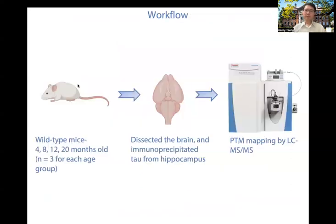In the first experiment of my REC project, I used wild-type mice with four different ages — 4, 8, 12, and 20 months old — with n=3 for each age group. I dissected the brains from these mice and isolated Tau from the hippocampus, since that's where H-Tau is located. I then sent this isolated Tau to the UNC Proteomics Core for PTM mapping analysis.